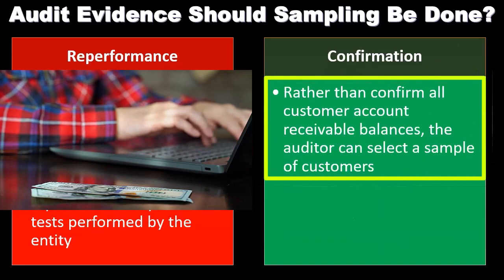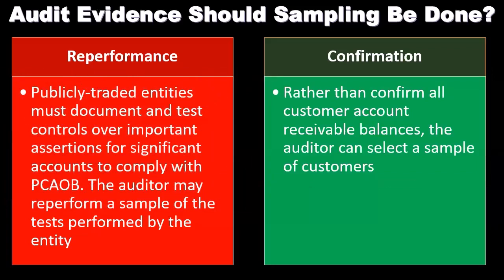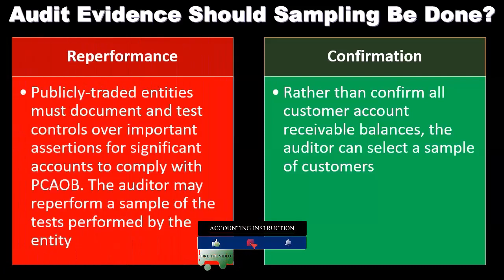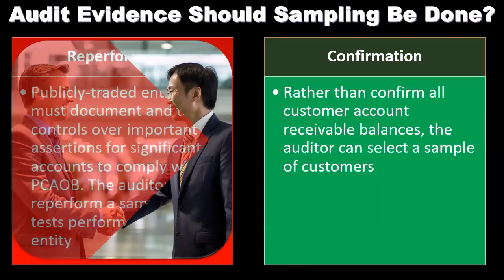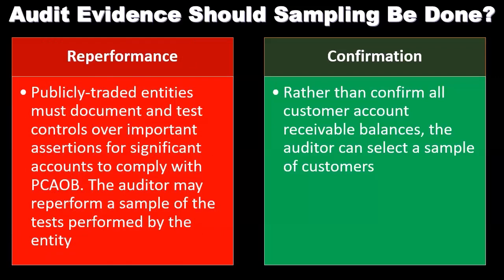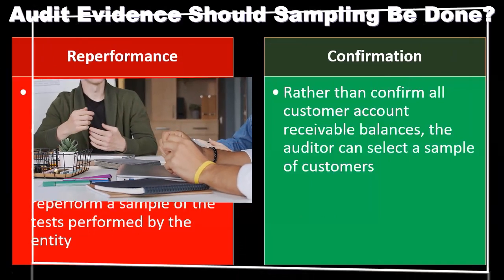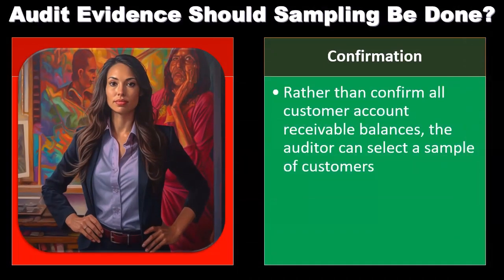Confirmation. Rather than confirm all customer accounts receivable balances, the auditor can select a sample of customers. A confirmation basically means that if we have the receivable on the books — the amount owed to the organization from customers — we take a look at the subledger broken out by customer showing who is owing money at the point in time of the financial statements. Then we want to confirm that. We're not going to confirm all customers, but we'll send out some confirmations to actual customers to see whether or not they agree that they owe the company money. We could format those confirmations in different formats. The point is we pick a sample and confirm it, hoping it will be representative of the entire accounts receivable so we can say the accounts receivable looks fairly stated.